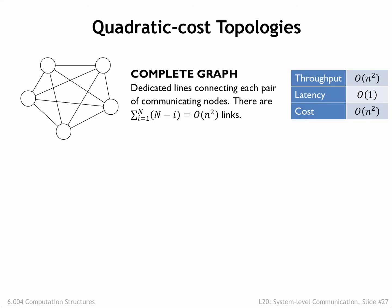The most general network topology is when every component has a direct link to every other component. There are order n-squared links, so throughput and cost are both order n-squared. The latency is one time unit since each destination is directly accessible. Although expensive, complete graphs offer very high throughput with very low latencies.